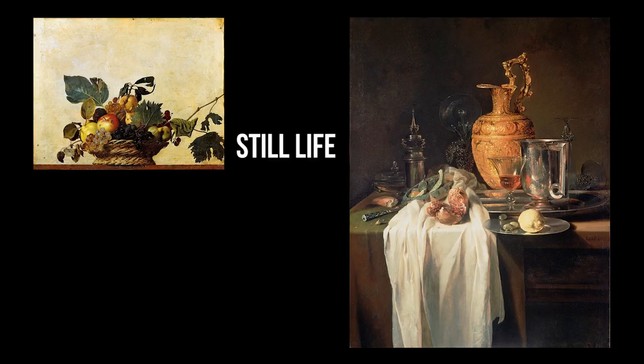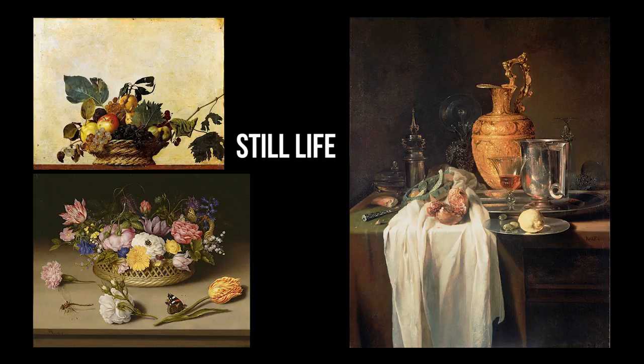Objects in a still life are often everyday items like fruits and vegetables, vases, dishes, fabrics and flowers, and often follow a general theme or motif.